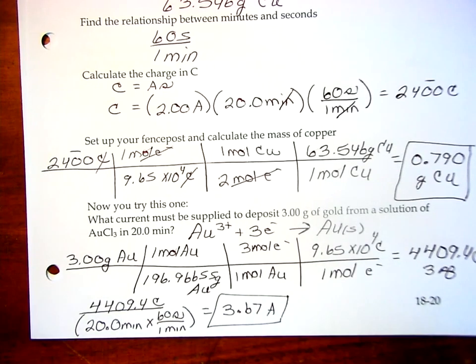And, I can keep 3 sig figs at the end. I get 3.67 amperes. And, that is the current that would be required to deposit the desired amount of gold in the allotted time.